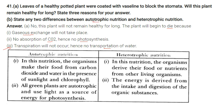State the differences between autotrophic and heterotrophic nutrition. In autotrophic nutrition, organisms make their own food from CO2 and water in the presence of sunlight and chlorophyll — all green plants are autotrophic. In heterotrophic nutrition, organisms do not make their own food but derive nutrients from other living organisms; energy is derived from the intake and ingestion of organic substances, and they are dependent on autotrophic organisms.